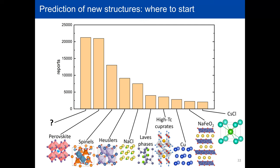What really amazes me is how nature prefers simplicity — the most common structures are actually the simpler ones. This graph isn't a representation of all structures in the universe; we were focusing on a very specific, narrow field like magnetic materials or superconductors. That's why there are so many reports of spinels, Heuslers, and high-temperature superconductors. But from a fundamental point of view, nature just prefers simplicity. The classification approach is definitely worth pursuing, because there are probably more very simple structures that we are just missing.